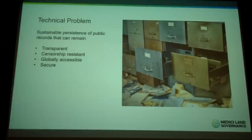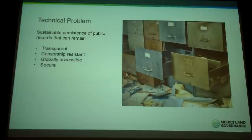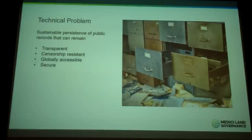Transparent means everyone can see the data — everyone can have knowledge about how it was written, who wrote it, and when it was written. When we can see all those things, we have full transparency. Censorship resistant means once I write something to this public record, it stays there — it's immutable, it doesn't go away. I hedge a little on the terminology because in reality it's very difficult to say 'never' in computer security.